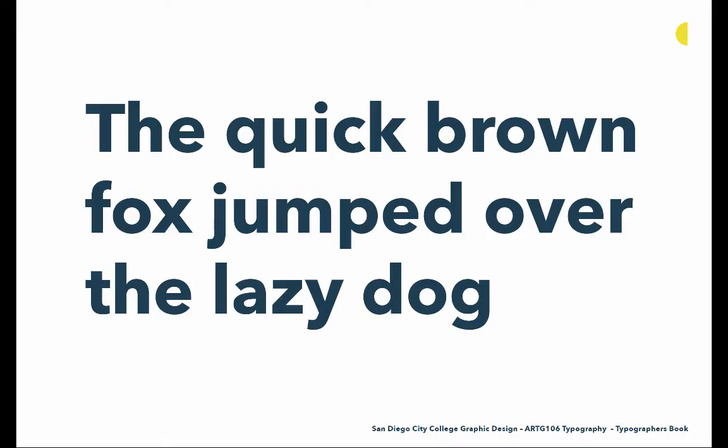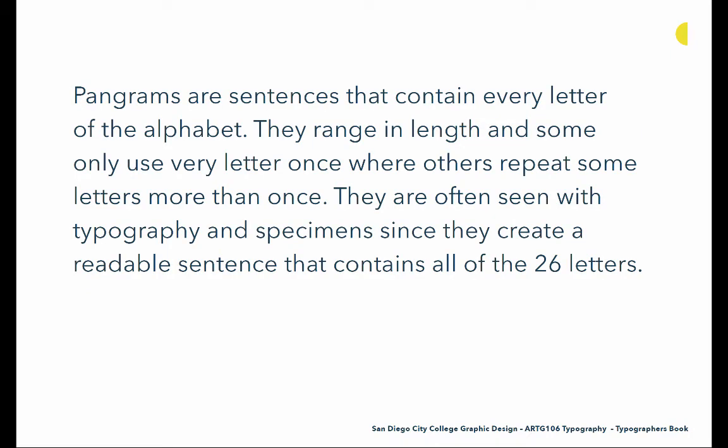Then we have things like the quick brown fox jumped over the lazy dog — this is called a pangram. Pangrams are sentences that contain every letter of the alphabet. They range in length and some only use every letter once, where others repeat some letters more than once. They are often seen with typography and specimens since they create a readable sentence that contains all 26 letters. So there's a lot of bang for the buck — we can see every letter in that typeface and also judge its readability.